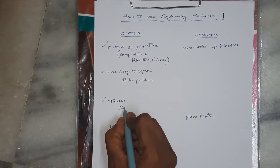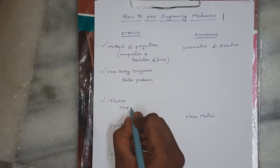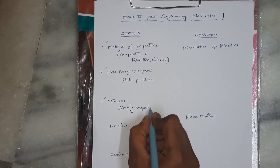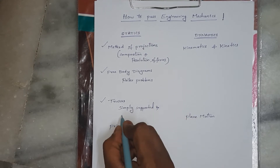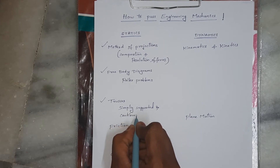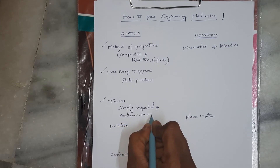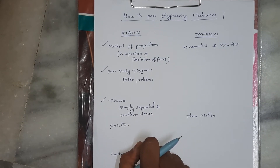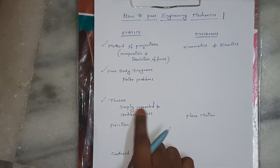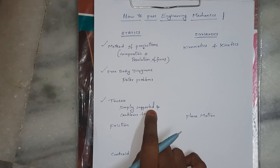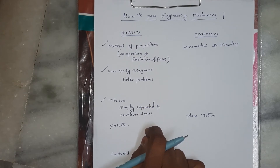Trusses is a very important topic. In exams, generally two types of trusses are asked: Simply Supported Truss and Cantilever Truss. For Cantilever Truss, you can directly start from a free joint. But for Simply Supported Truss, you first need to calculate the reactions at the hinge and roller supports before you can start solving.